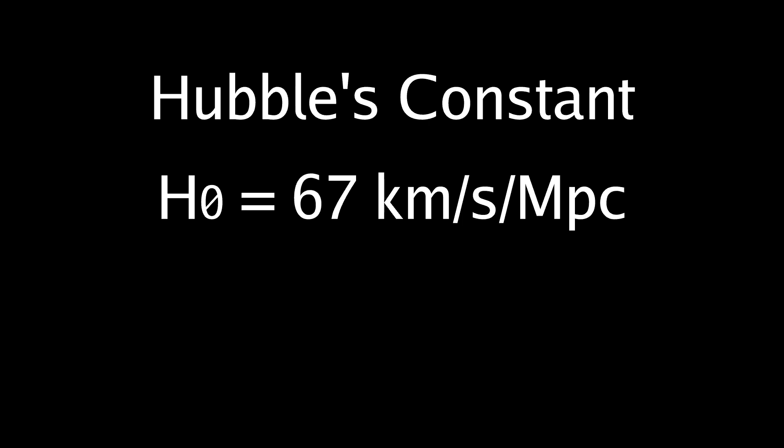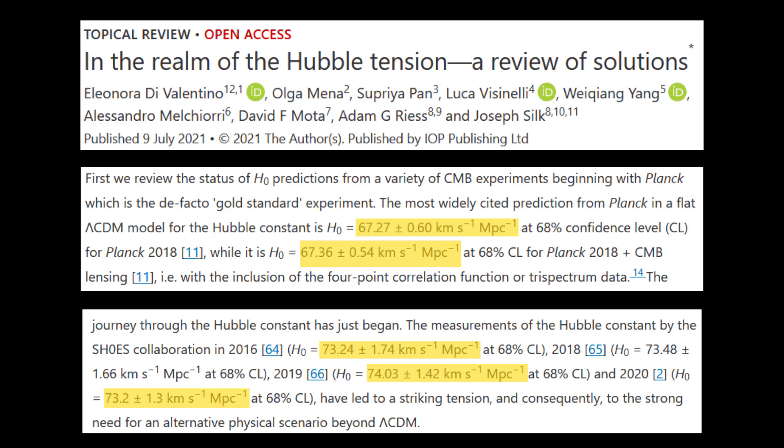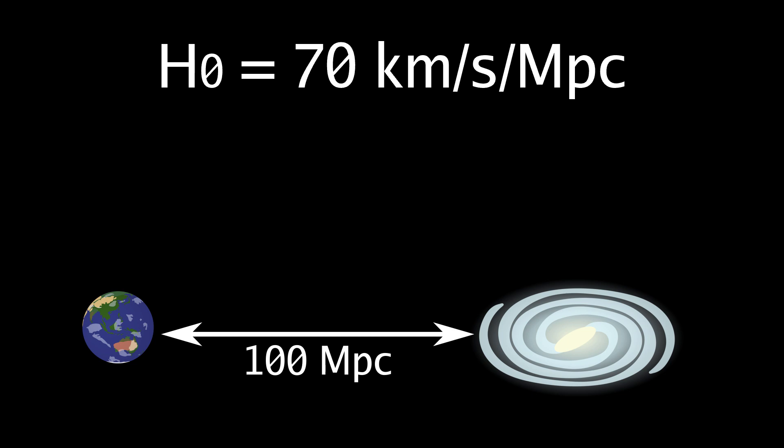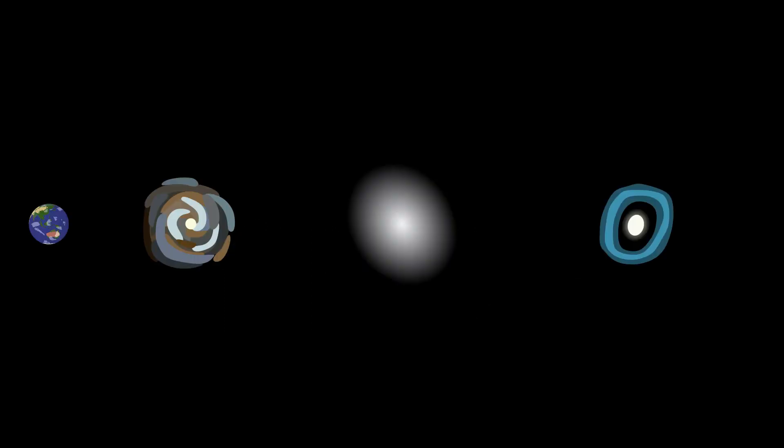Hubble's constant is currently 67 kilometers per second per megaparsec, or 73 kilometers per second per megaparsec. If Hubble's constant is 70 kilometers per second per megaparsec, then a galaxy 100 megaparsecs away will be moving away at 7000 kilometers per second. The further and further the galaxy is away from us, the faster and faster the galaxy moves away.